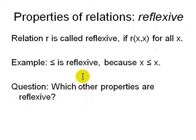And the simplest property is reflexive. That means R is called reflexive if x is related to itself. For example, less than or equal to is reflexive because x is less than or equal to x for all x. Which other properties are reflexive? Think about it.